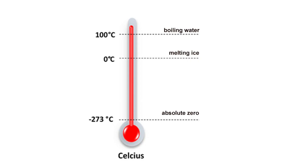In the Celsius scale, the freezing point of water is set at zero degrees Celsius, while the boiling point of water is defined as 100 degrees Celsius at standard atmospheric pressure.